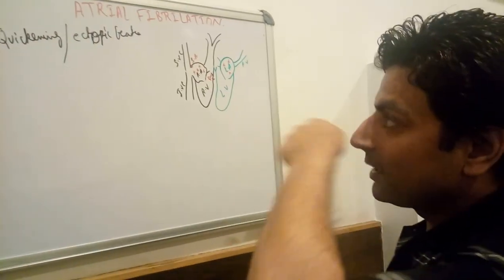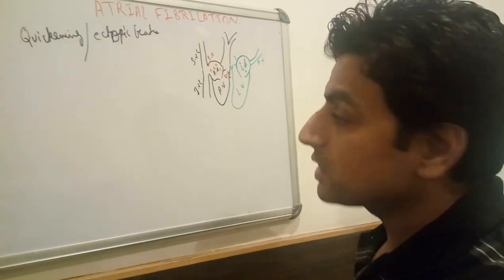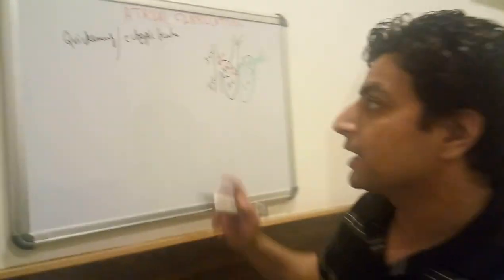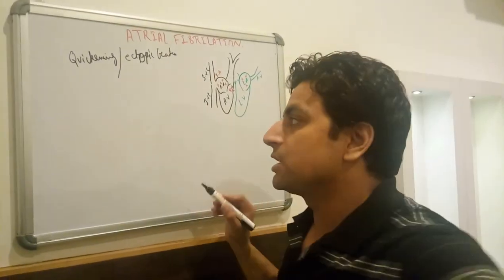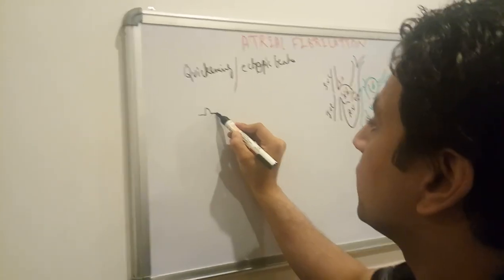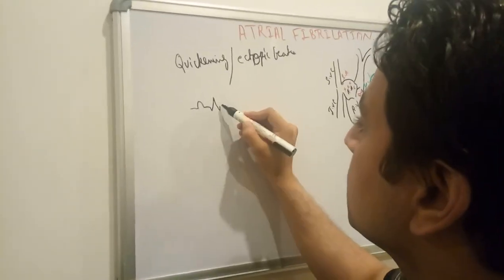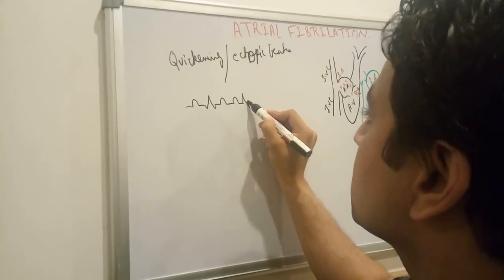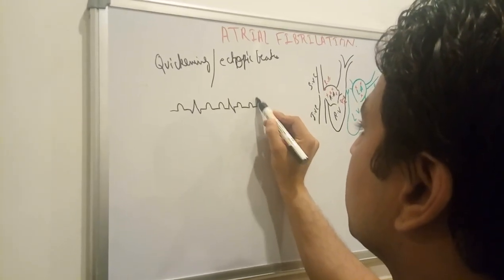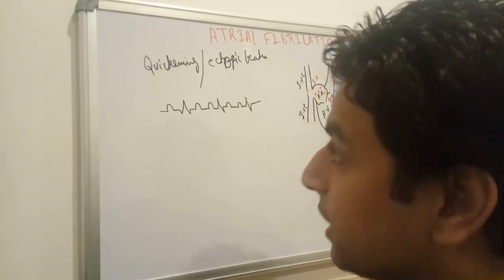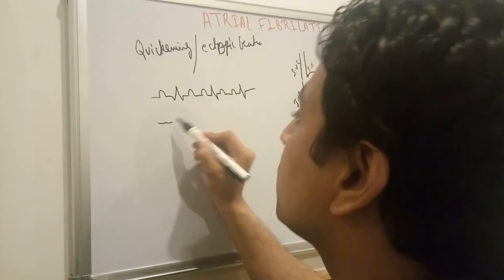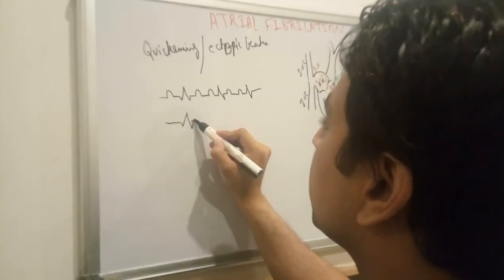Now we are going to look at the ECG. In a normal ECG, you see a P wave, then QRS complex, then T wave — then P wave, normal QRS, T wave. But in atrial fibrillation, there are fibrillating waves but no P wave; then a QRS complex, then T wave, then fibrillating waves again.